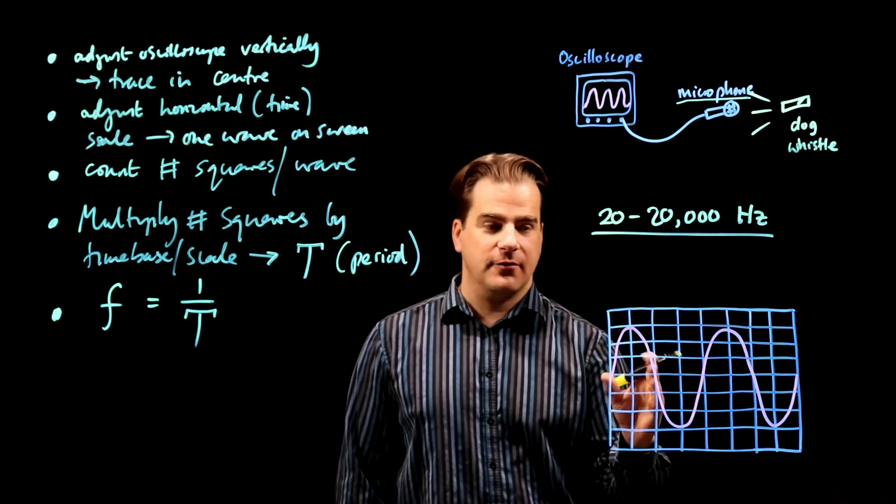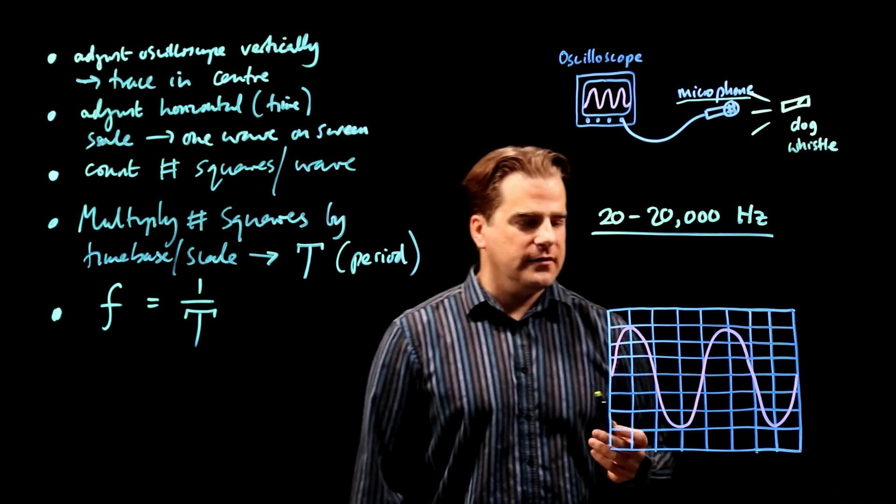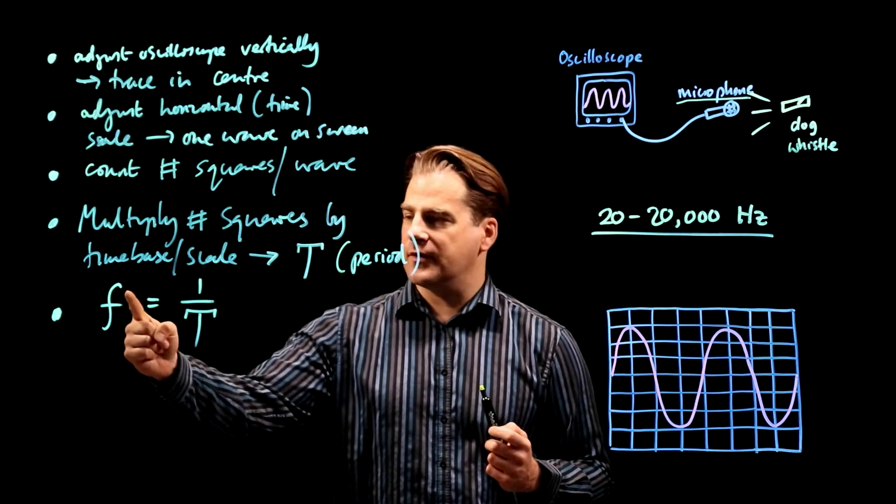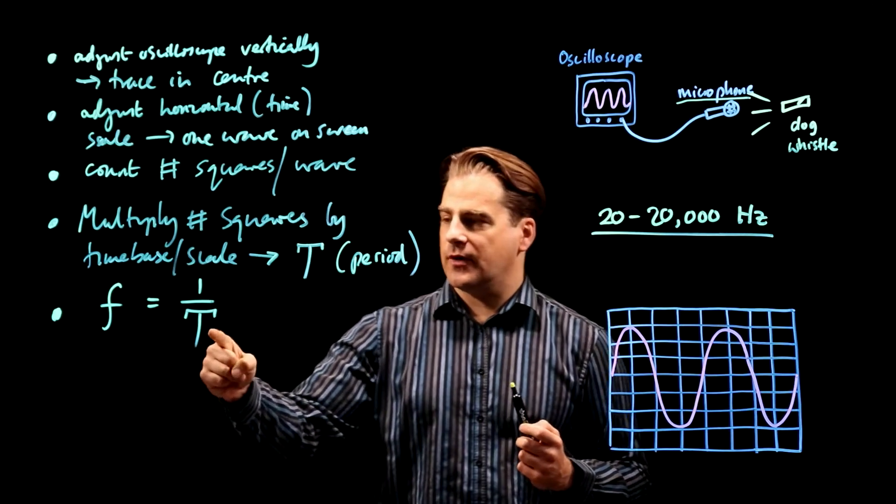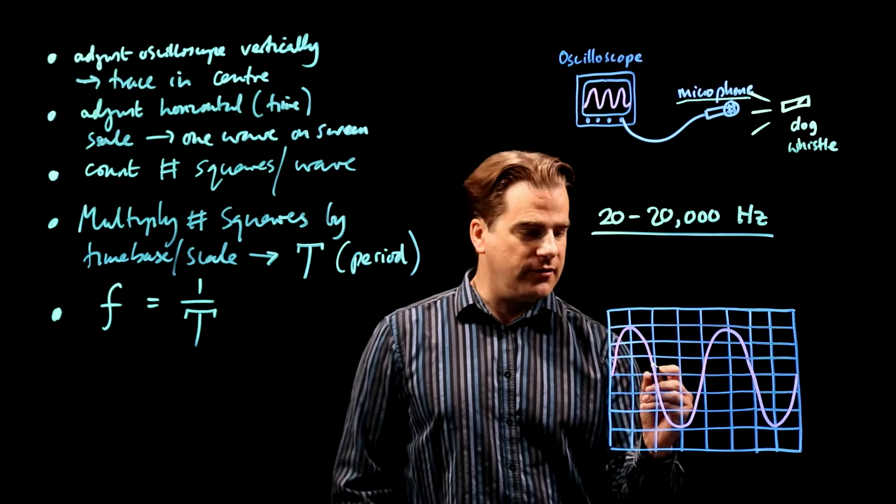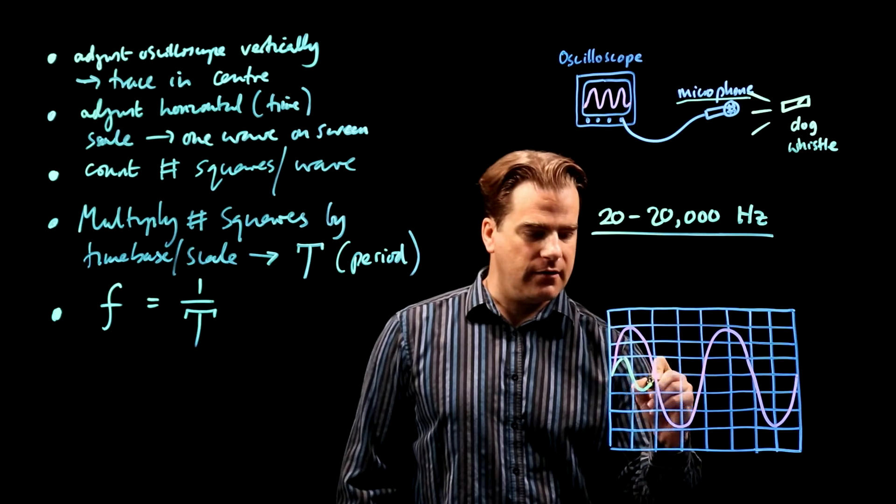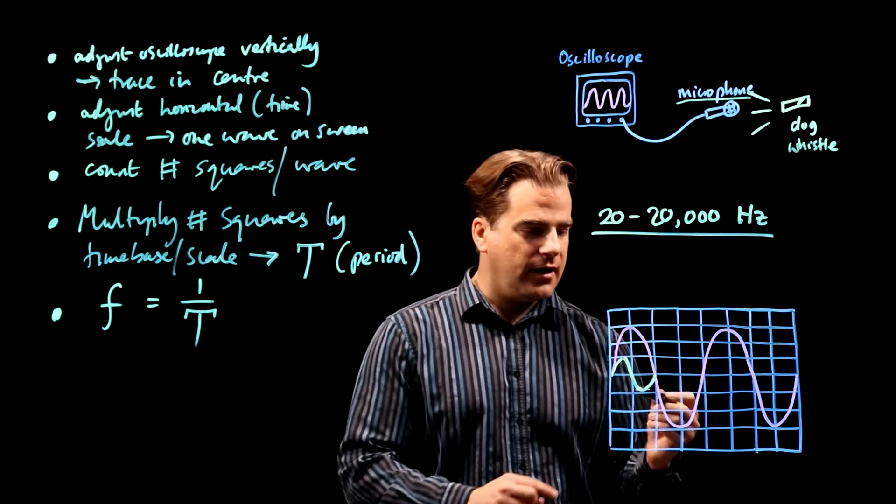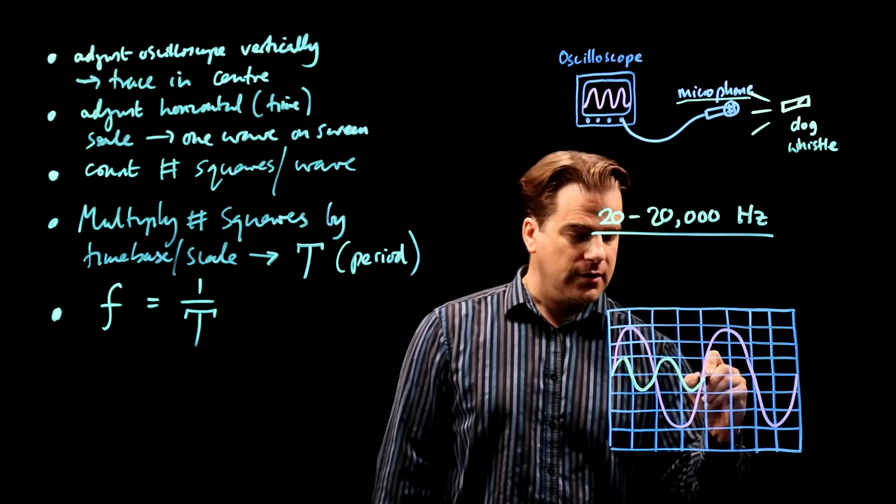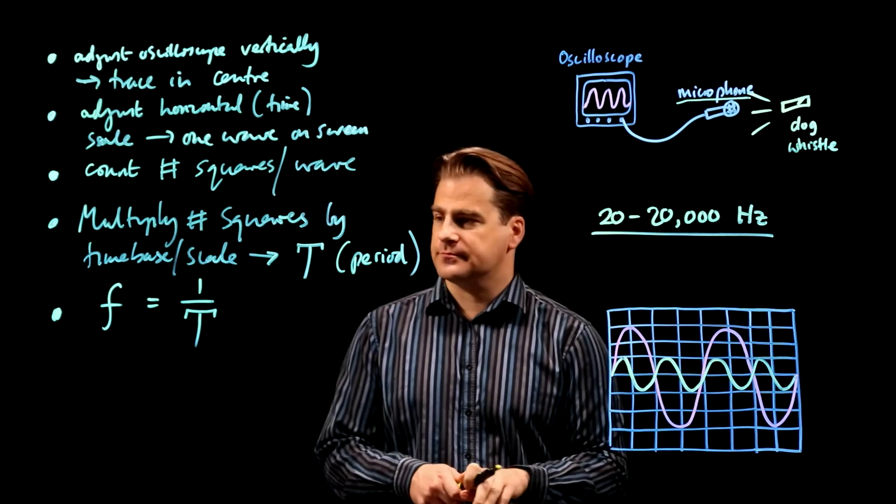For a quieter sound wave, we want a smaller amplitude and it was double the frequency. So let's look at this equation, double the frequency. What do we do to the period to double the frequency? Well, it's an inverse relationship. So you have to half the period, which means the period is going to be two squares. So smaller amplitude period of two squares would be something like that. See lower amplitude, and instead of four square period, it's now two squares.